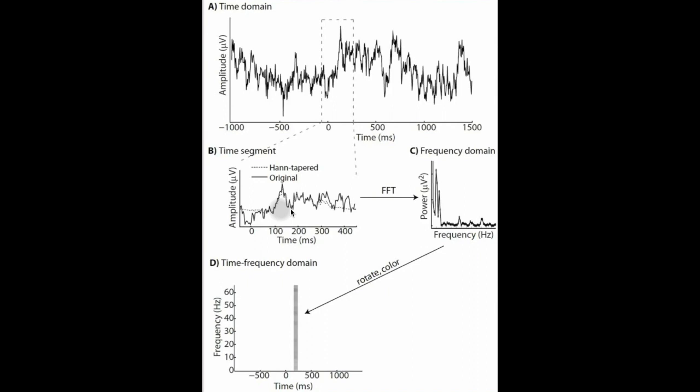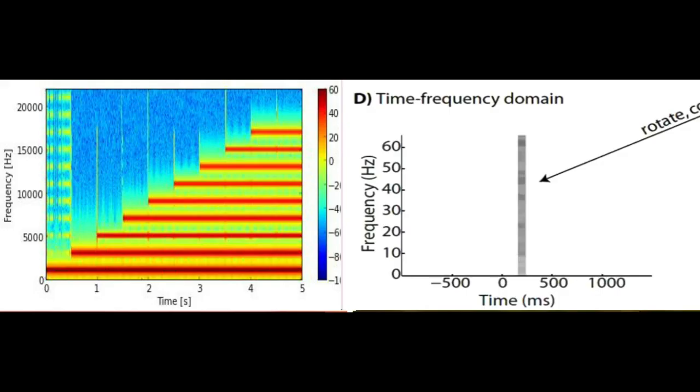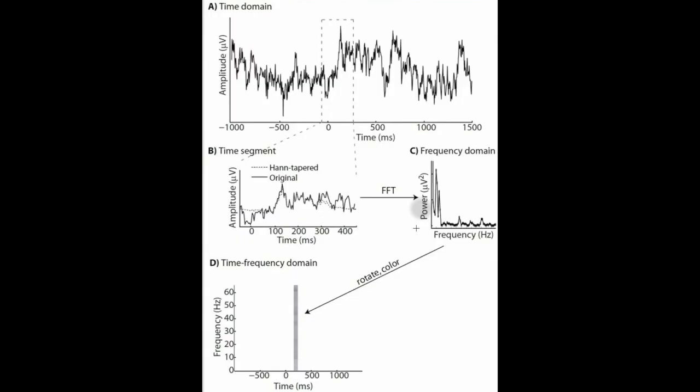This will give us the frequency domain of the same signal. Then we'll transform the frequency domain into a color-coded time-frequency domain, which is exactly what a spectrogram attempts to accomplish. This process will be repeated many times throughout the entire waveform and across time.